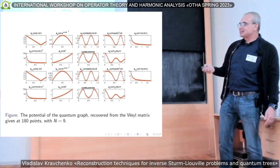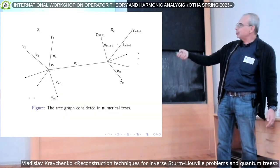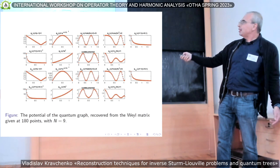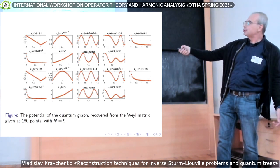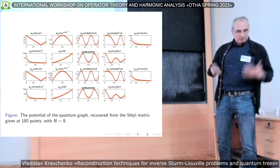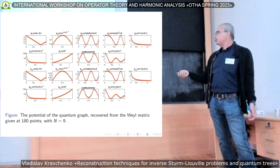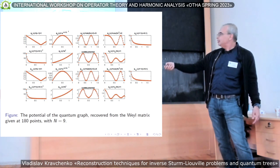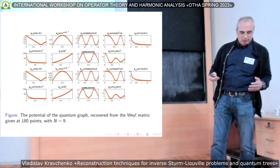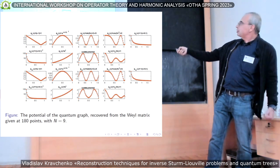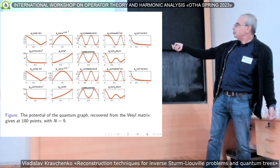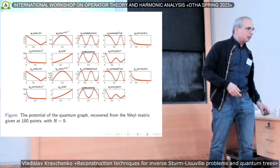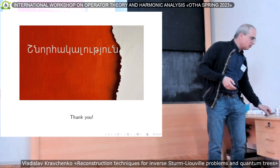Just to show you something: for this graph, which already requires one step of leaf peeling, this is how these potentials were recovered. You see that numerically it works really very well. In all cases, just 10 coefficients were used — this is why M here is 9. Before leaf peeling and after leaf peeling, this is the comparison: this potential was reconstructed before and this after. You can see that there is a small difference, but numerically it is very satisfactory. Thank you very much for your attention.